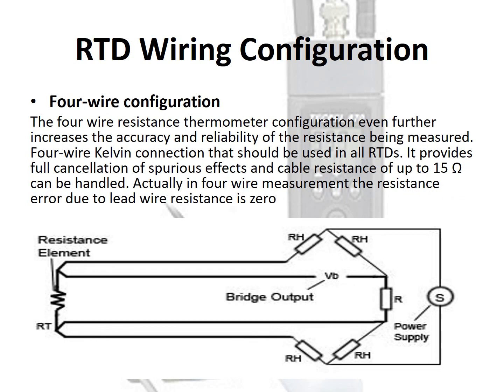The 4-wire resistance thermometer configuration further increases the accuracy and reliability of the resistance being measured. The 4-wire Kelvin connection provides full cancellation of spurious effects, and cable resistance of up to 15 ohms can be handled. In 4-wire measurement, the resistance error due to lead wire resistance is zero.